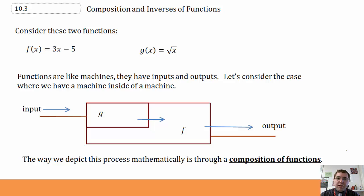This is section 10.3 of Honors Algebra 2, Composition and Inverses of Functions. Consider these two functions: f of x equals 3x minus 5, and g of x equals the square root of x.